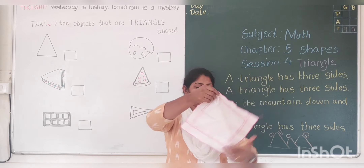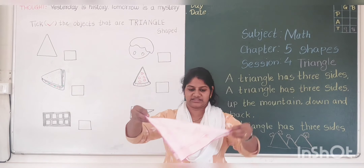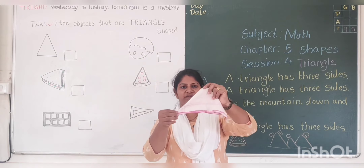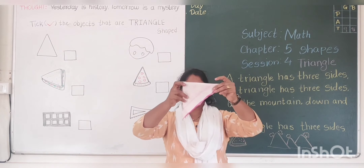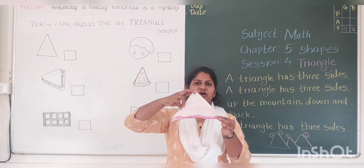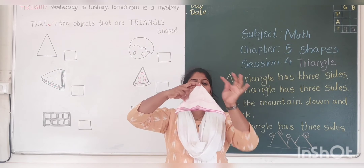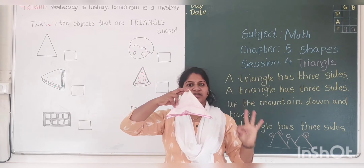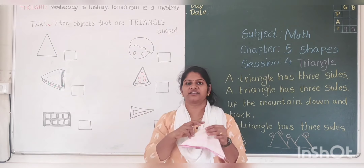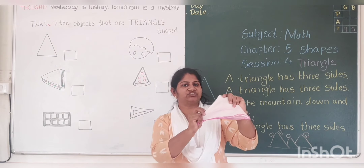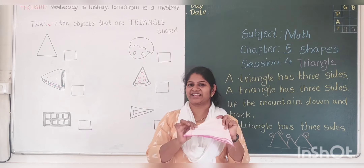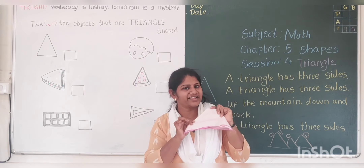Now I am going to fold it like this. Tell me, which shape is this? Let's count how many corners. 1, 2, 3. 3 corners. 1, 2, 3. 3 sides. 3 corners and 3 sides. This is triangle shape. I have made triangle shape. Like this, you can do at home.